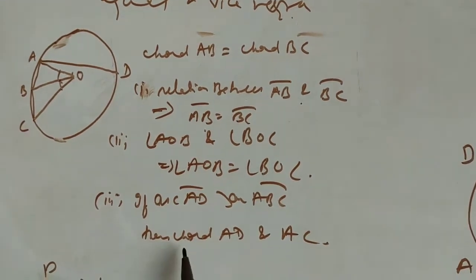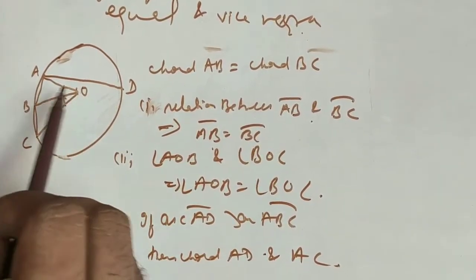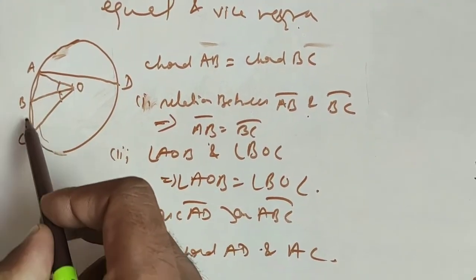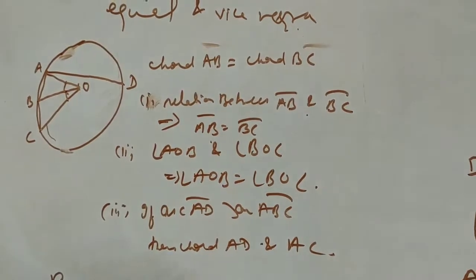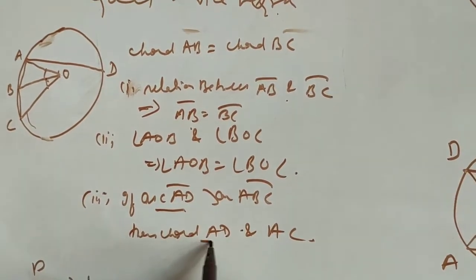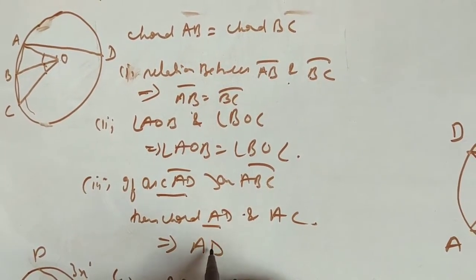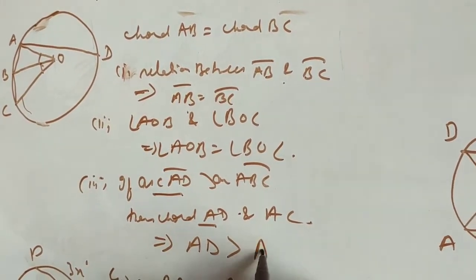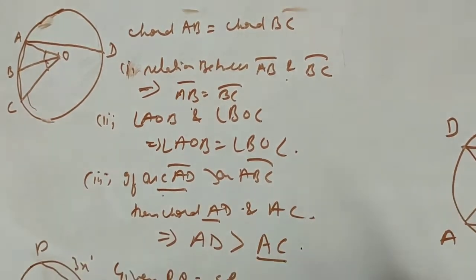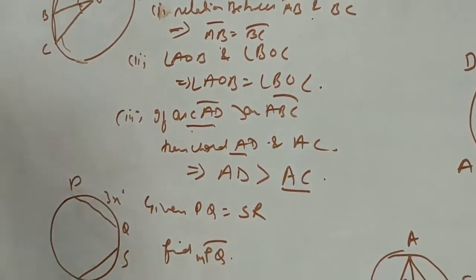Next, arc AD is greater than arc ABC. He is saying arc AD is greater than arc ABC, and he is asking about chord AD versus chord AC. If the arc is greater, then the chord will be greater, so chord AD will be greater than chord AC.